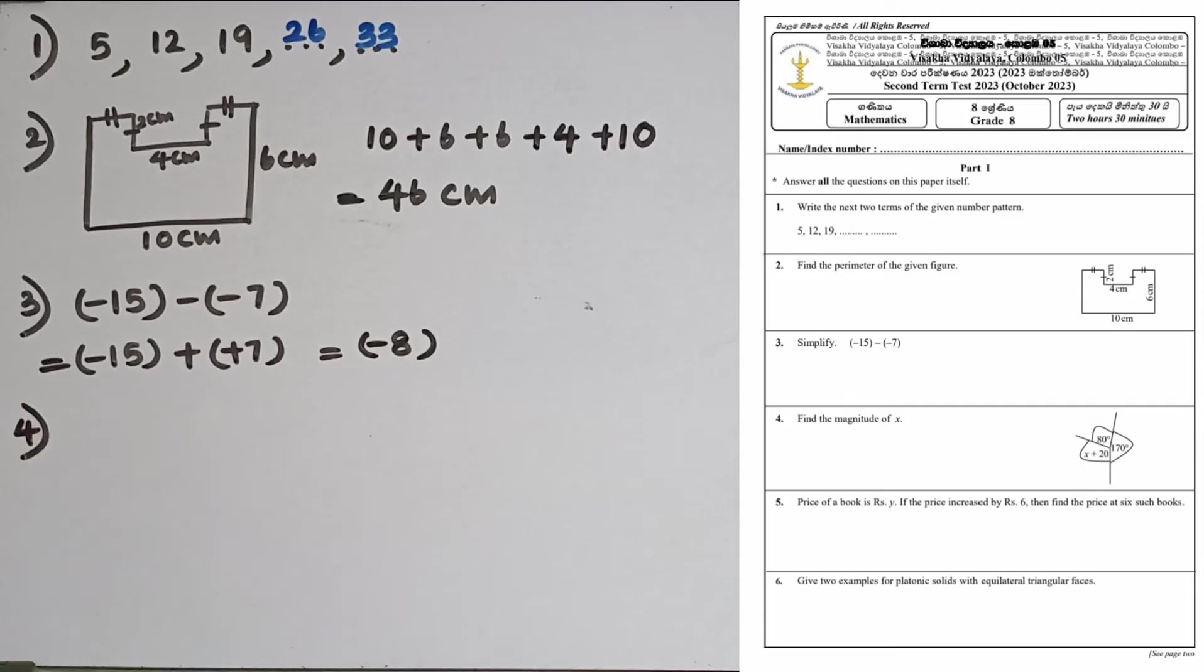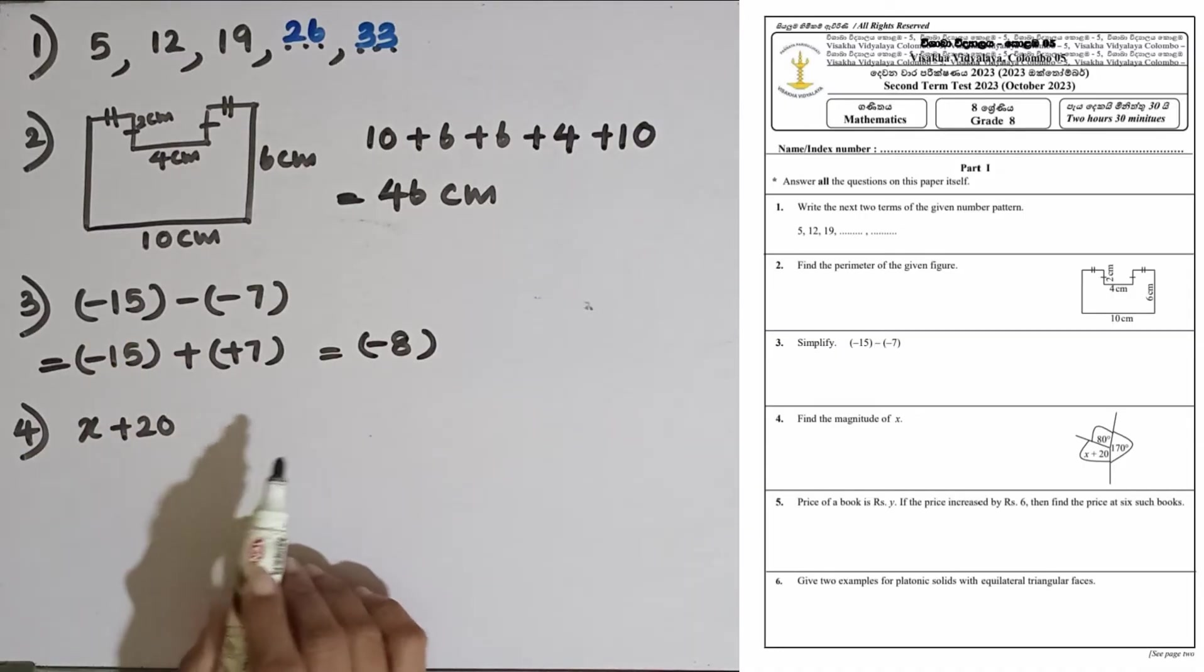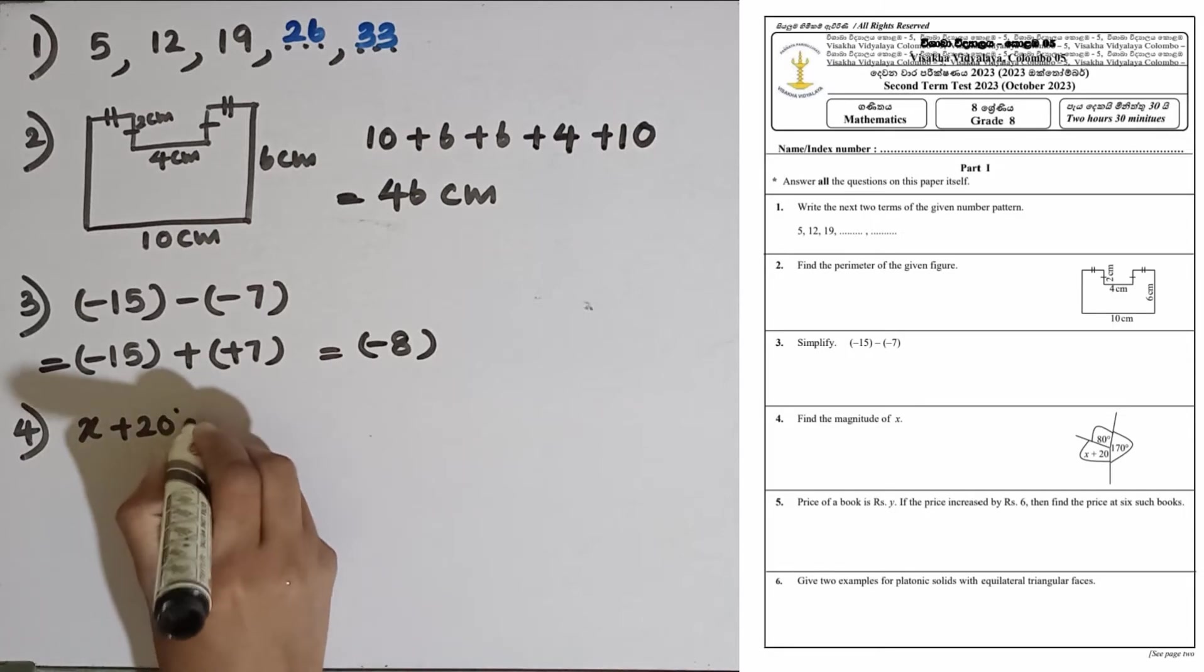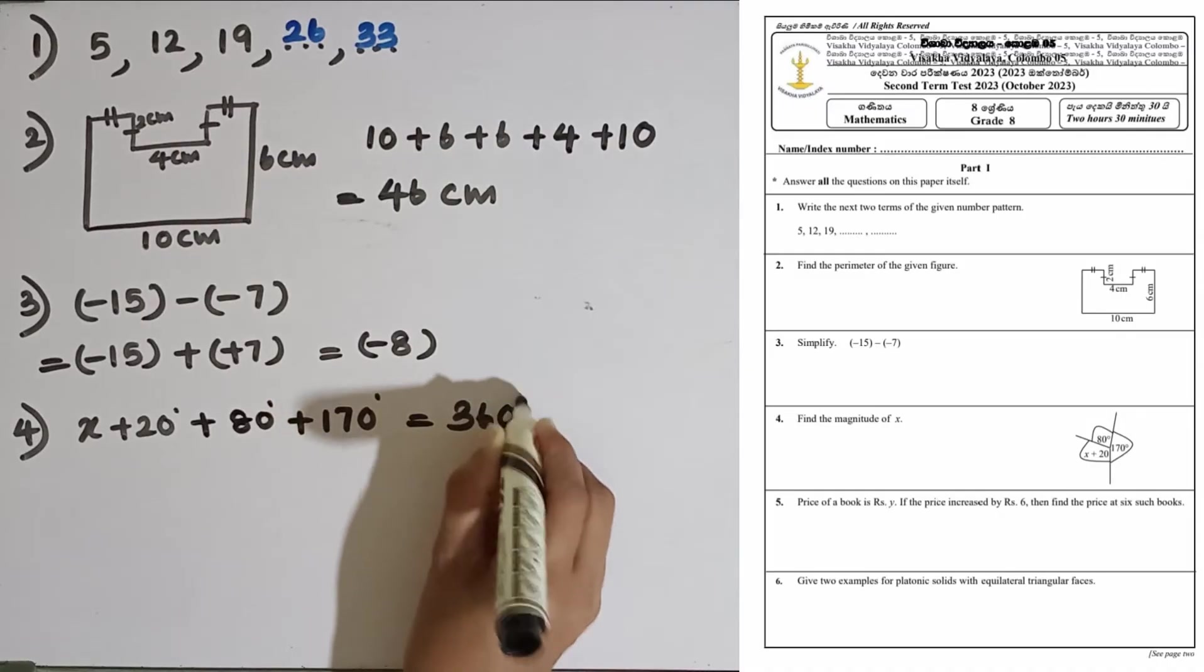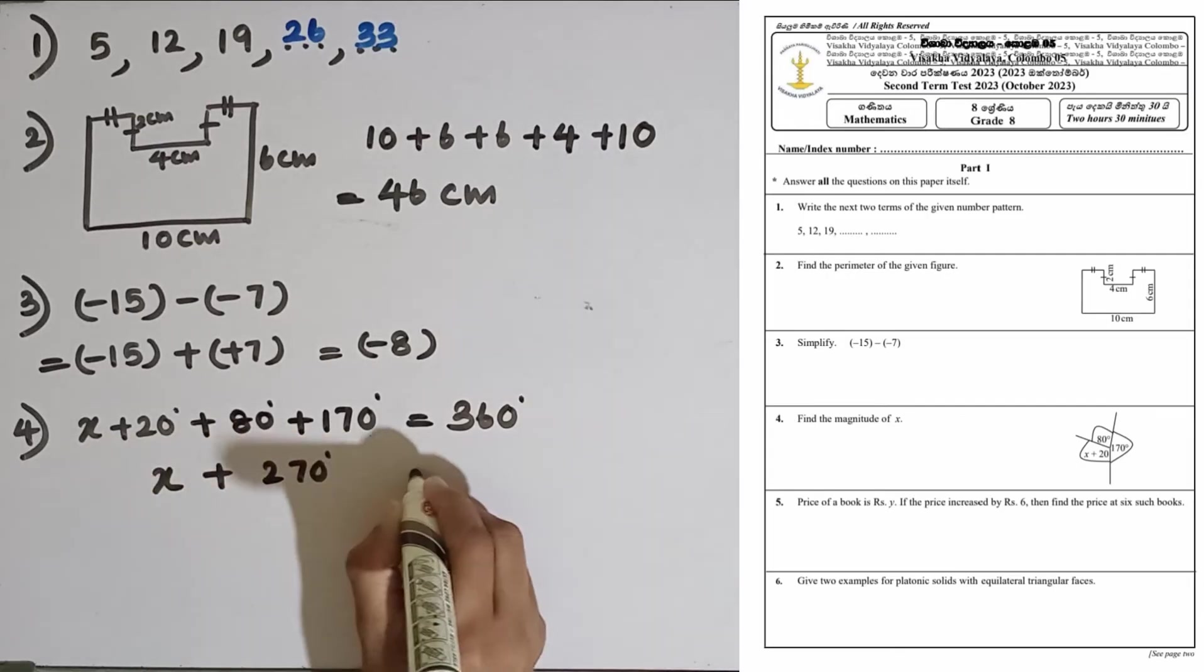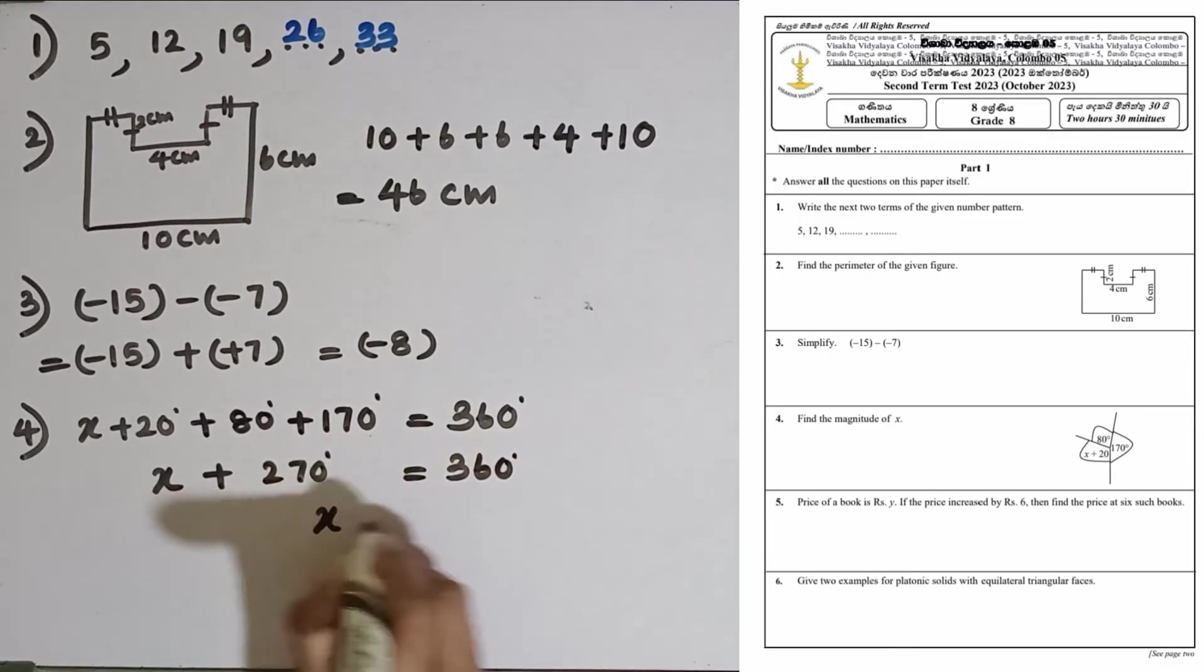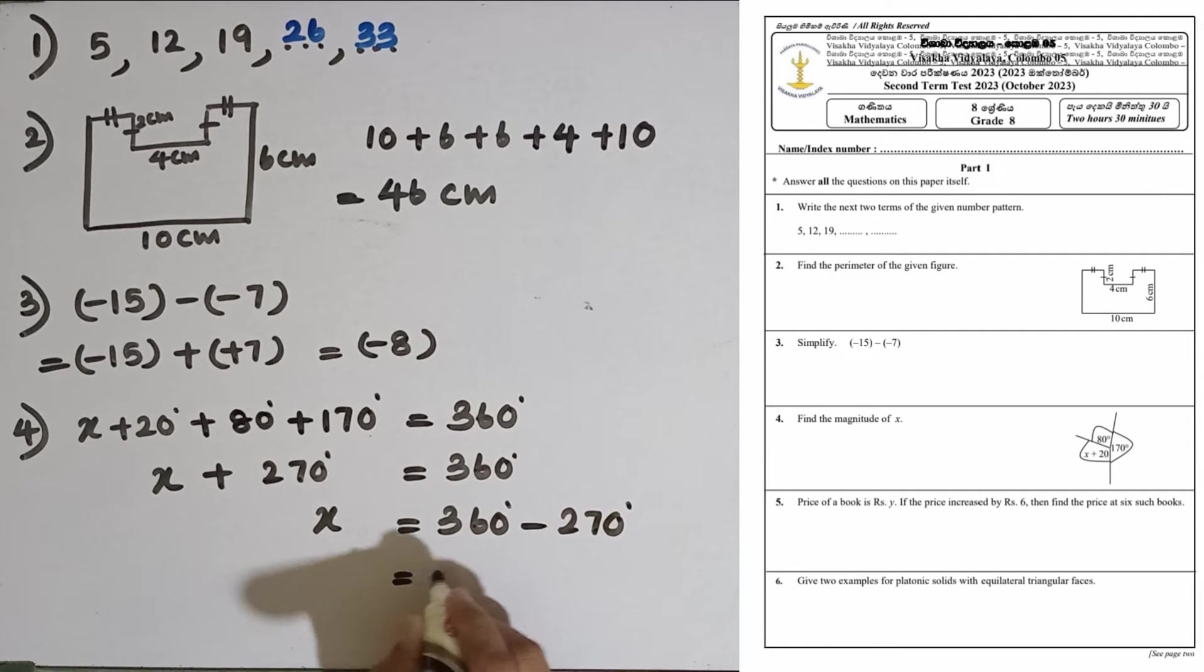Question number 4: Find the magnitude of x. These three angles, x plus 20, then 170 and 80, all these are three angles located around a point. We know that the sum of the angles around the point is equal to 360 degrees. So we can write the equation: addition of the three angles equal to 360 degrees. We can add these three angles, x plus 270 equal to 360 degrees, then x equals 360 degrees minus 270 degrees. The value is 90 degrees.